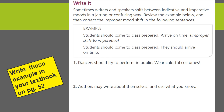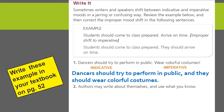Let's go ahead and write these examples in your textbook on page 52. Our first sentence says: 'Dancers should try to perform in public, wear colorful costumes.' The first sentence is indicative and the second sentence is imperative. It would be much better if both were indicative. The corrected sentence reads: 'Dancers should try to perform in public, and they should wear colorful costumes.' Now the sentence reads as indicative.